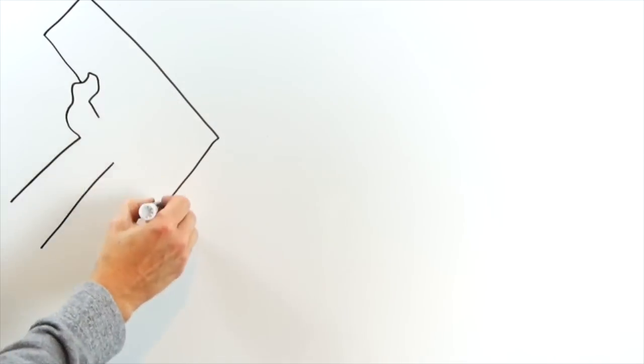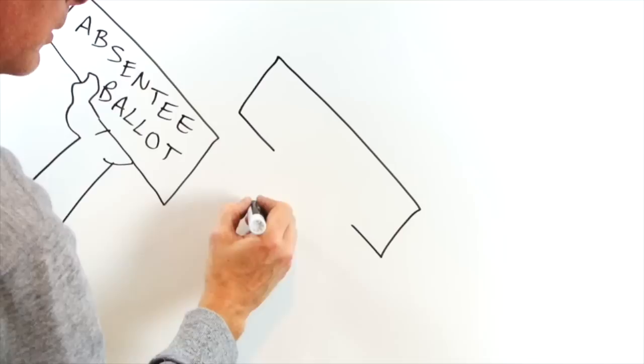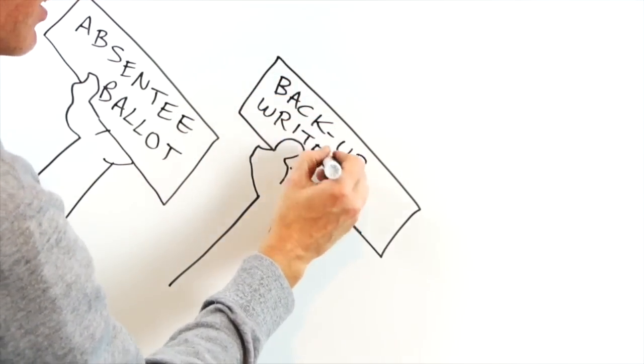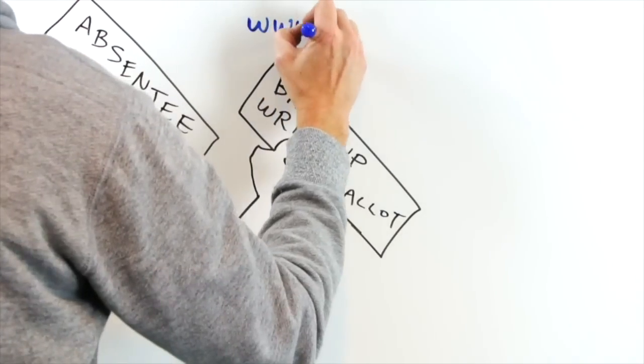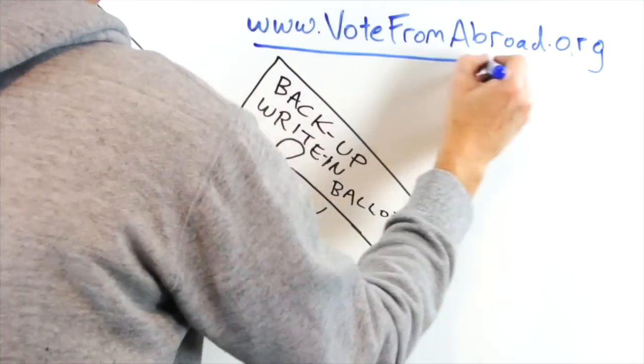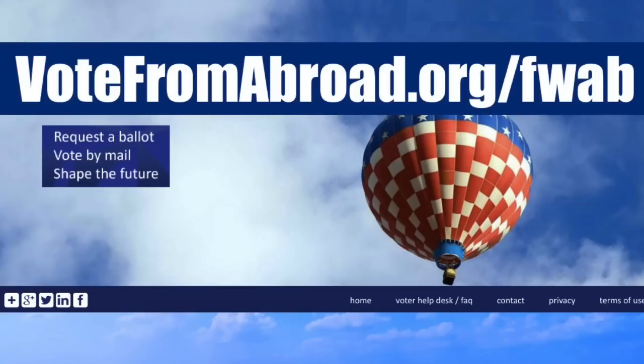The winning play: apply for an absentee ballot, then immediately vote a backup write-in ballot, and make sure they don't block the vote 2020! Send in your backup ballot now at votefromabroad.org/fwab.